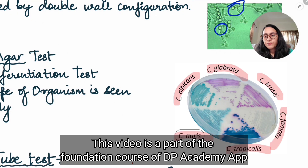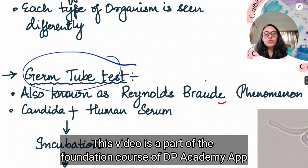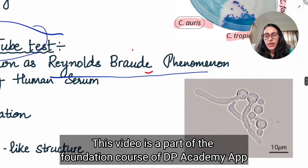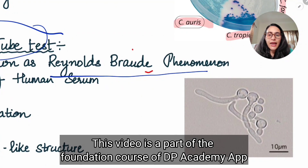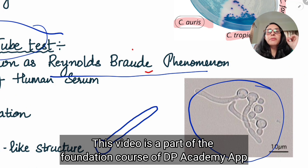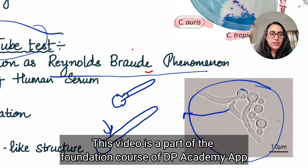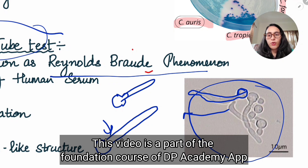Another test done for Candida is the germ tube test, also known as Reynolds Broad Phenomenon. In this test, we take Candida, add human serum, and incubate it. Once incubated, you can find big tube-like structures — these are pseudo hyphae. A tube is coming out of the organism, and this is known as the germ tube, also known as Reynolds Broad Phenomenon.